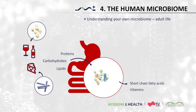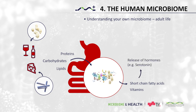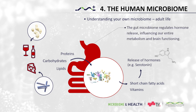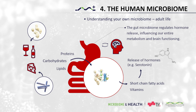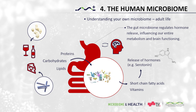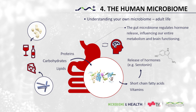The metabolites your gut microbiome produces also represent signals for the release of several hormones, thereby regulating the metabolism of our entire body including our brain. The gut-brain axis describes the communication system between the central nervous system and our gut microbiome. Through activating the release of hormones such as serotonin, gut microbes influence behavior and neural development. Changes in the composition of the gut microbiome can even lead to depressive behavior.